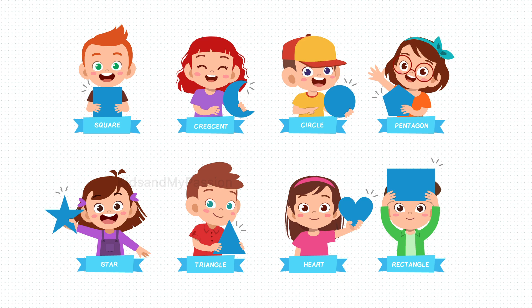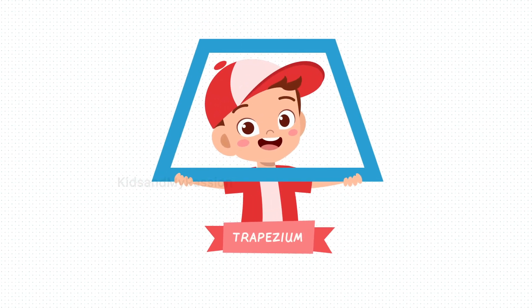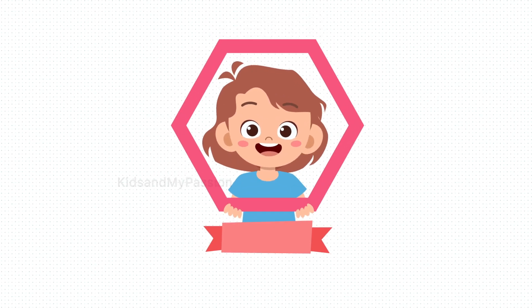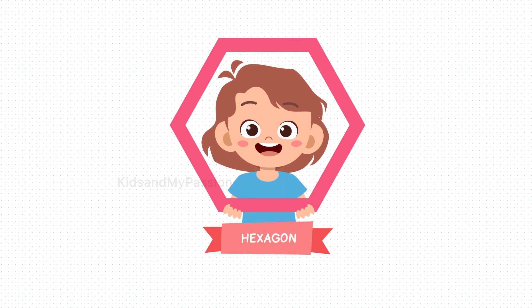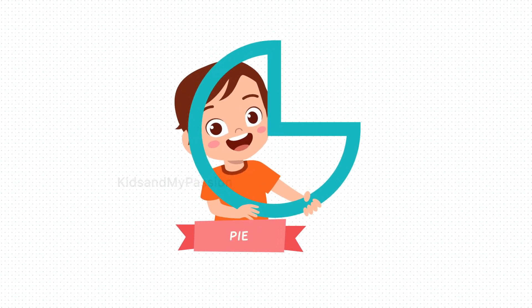So kids, these are the different shapes we have seen. Now let's see some more different shapes. Rhombus. Trapezium. Hexagon. Parallelogram. Pie.